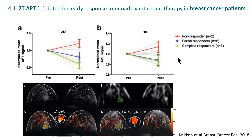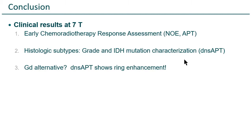Very important for therapy decisions is also breast cancer. This is a study from Utrecht, from Erwin Krikken, who did the same with 7T APT in breast cancer patients. He saw the same thing but in the opposite direction and on the APT contrast — non-responders actually increased, and the complete responders showed decreased APT signal. Again, we could directly decide after the first therapy whether to continue or not. That would be a really nice tool for clinicians to decide if patients should continue this therapy. Conclusion for clinical results: we have early chemoradiotherapy response assessment with NOE and APT depending on the organ, grade and IDH mutation characterization, and a potential alternative for gadolinium.